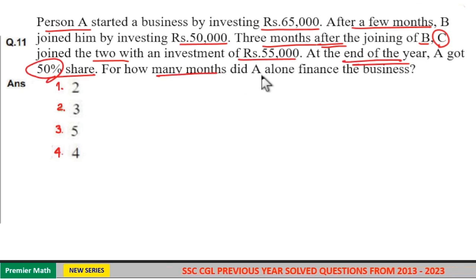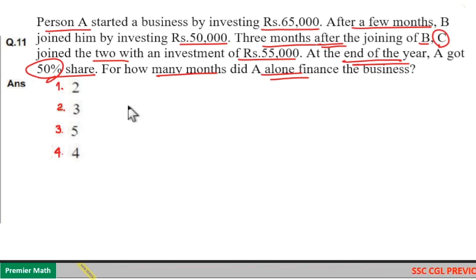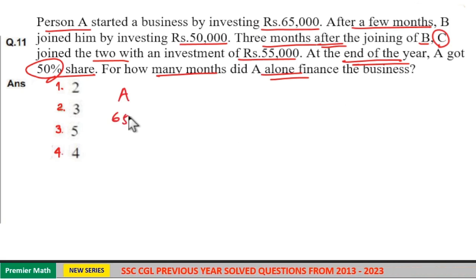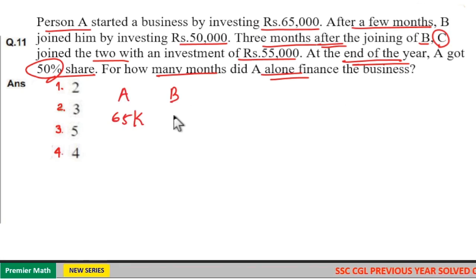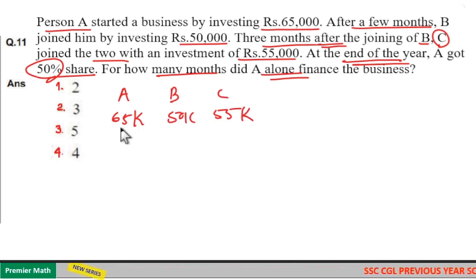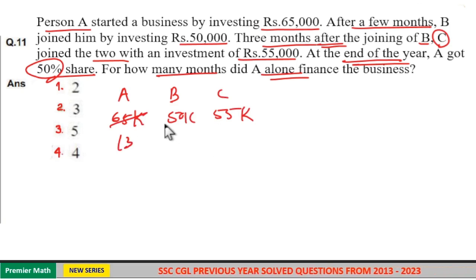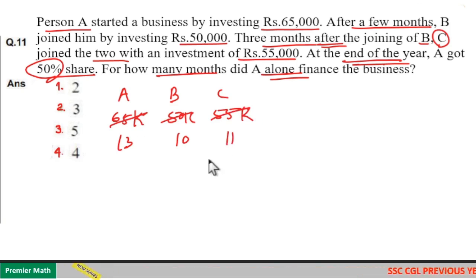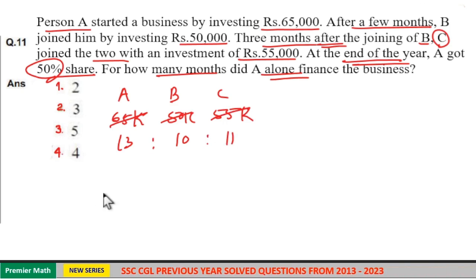The question asks: for how many months did A alone finance the business? Take the ratio of investment of A, B and C, which is A: 65,000, B: 50,000, C: 55,000. Now take the ratio — 5 goes 13 times in 65, 5 goes 10 times in 50, 5 goes 11 times in 55. That is 13:10:11.